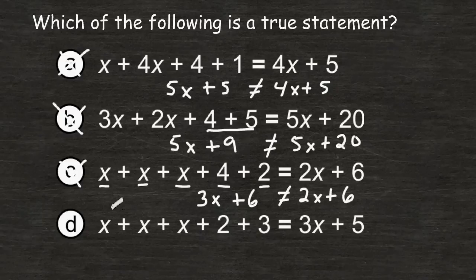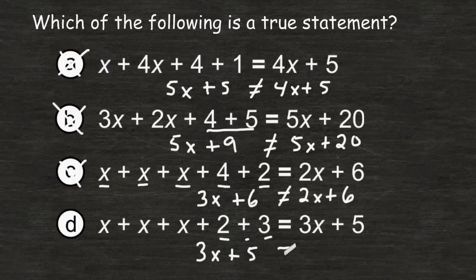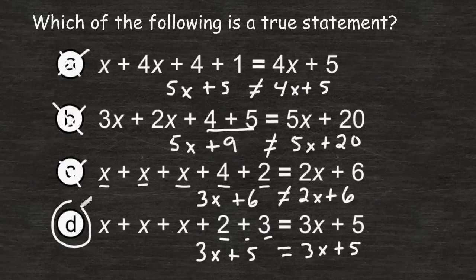So the answer must be choice D, but we still should simplify everything on the left and make sure it is equal to everything on the right. So we have 3x's here and when combining those that gives us 3x. 2 plus 3 is equal to 5, so now we have 3x plus 5, and 3x plus 5 is equal to 3x plus 5. So, choice D is the correct statement.